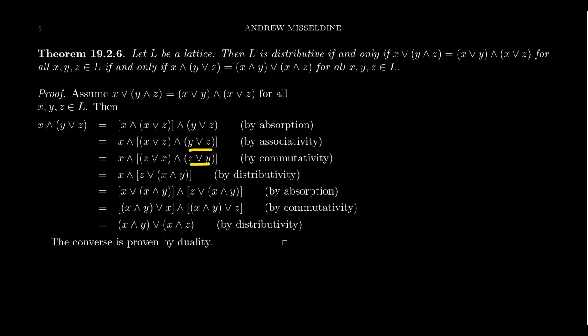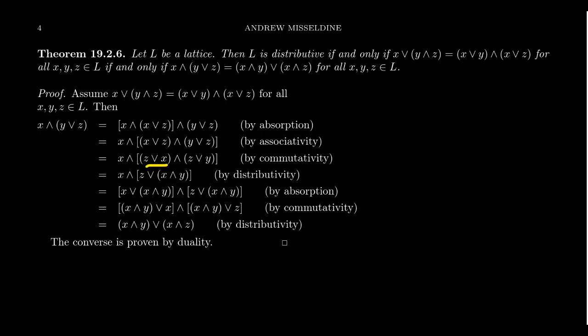By commutativity, X join Z becomes Z join X, and Y join Z becomes Z join Y. Now the expression looks like the right-hand side of the distributive property — specifically Z join X applied to Z join Y — so we can apply our assumed distributive law. This gives us Z join (X meet Y).